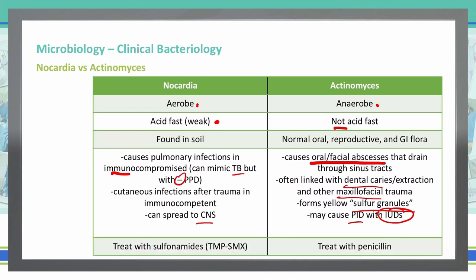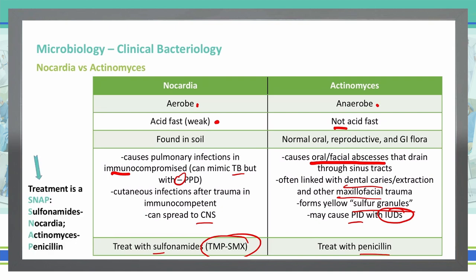For treatments, Nocardia is treated with sulfonamides like Bactrim, TMP-SMX, and Actinomyces is treated with penicillin. A good way to remember this is the abbreviation SNAP: Sulfonamides for Nocardia, and Actinomyces uses Penicillin.